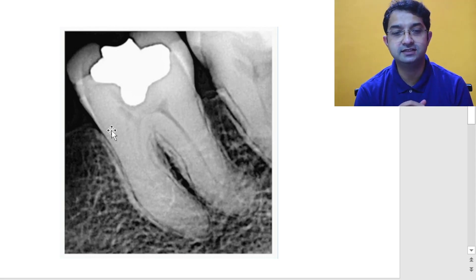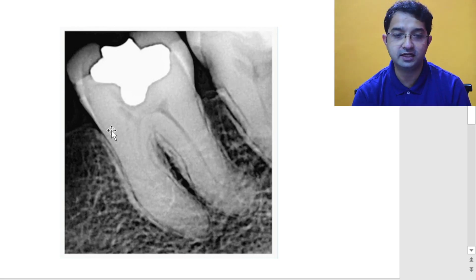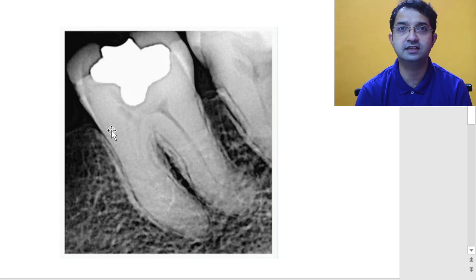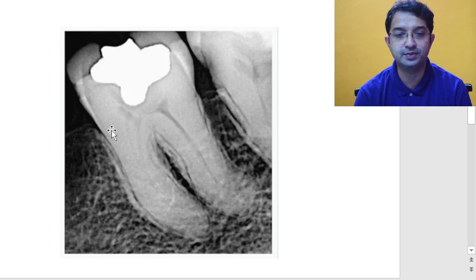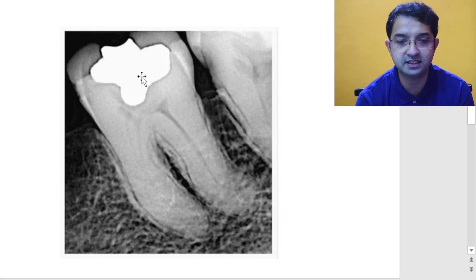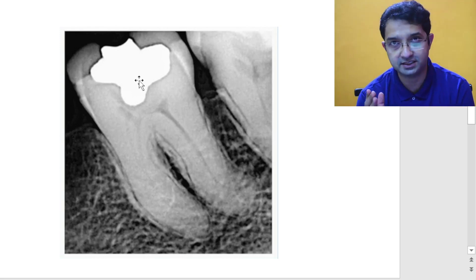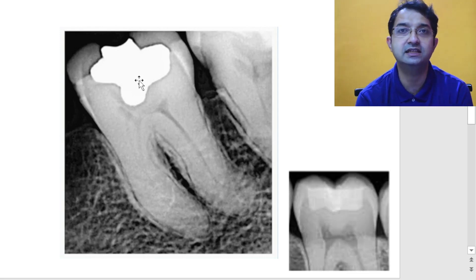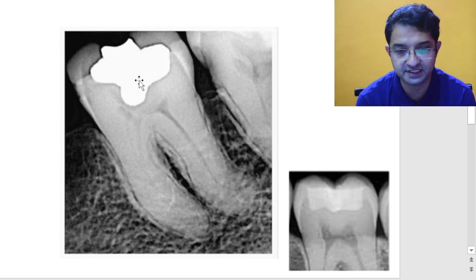As you can see, this is an image of a first molar and obviously all of you can make out that there is a radiopaque restoration. Generally when you have this much amount of radiopacity, it indicates it is either an amalgam or a cast restoration. A composite would be slightly less radiopaque than what you have seen here.